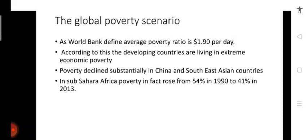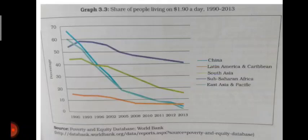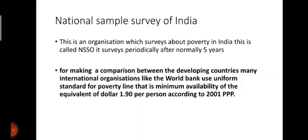In fact, the poverty ratio in sub-Saharan Africa rose to 54% in 1990 and 41% in 2013, meaning poverty there is higher than in other parts of the world. You can see the graph showing the share of people living on $1.90 per day — the poverty threshold — in 1990 and 2013. China, shown in blue, had a poverty ratio above 65% in 1990, but by 2013 it had fallen to near 5%.